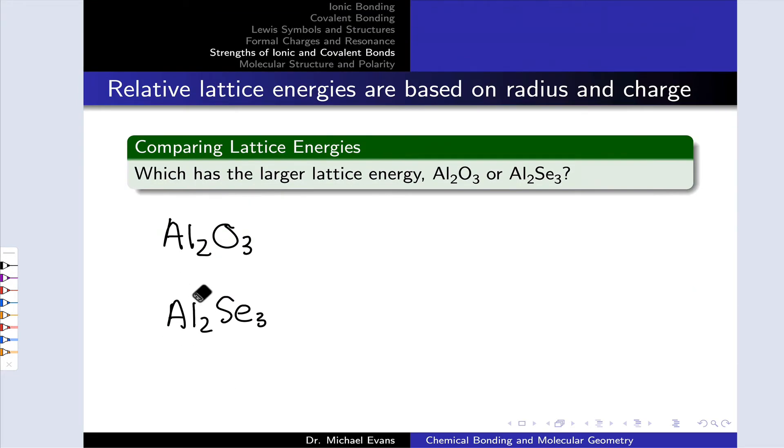In this problem, we're asked to compare the lattice energies of Al₂O₃ and Al₂Se₃. Let's start by considering the charges and the sizes of the ions. First, let's split each of these compounds into their component ions. Here we have Al³⁺ and O²⁻. Notice that the overall charge is balanced. We've got +6 overall from the two aluminums and -6 overall from the three oxygens.